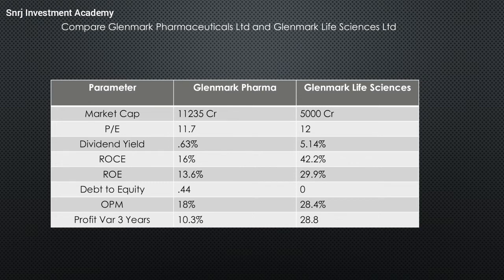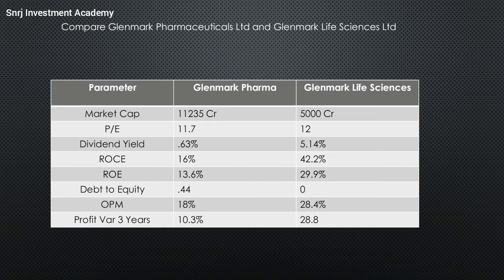Looking at all these parameters, Glenmark Life Sciences has good growth metrics — strong ROCE, ROE, good dividend yield, and zero debt making it a debt-free company. Financially, Glenmark Life Sciences has better financials. However, since Glenmark Pharma is a big company with a diversified portfolio, it is more stable. Glenmark Life Sciences has a concentrated API portfolio — if the API business cycle goes well the company performs well, but if the cycle reverses results could suffer. As of now, the financials are very strong.